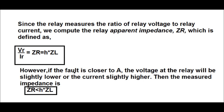Since the relay measures the ratio of relay voltage to relay current, we compute the relay apparent impedance ZR, which is defined as Vr / IR = ZR = H × ZL. However, if the fault is closer to point A, the voltage at the relay will be slightly lower or the current slightly higher. Then the measured impedance will be less than H × ZL and the relay will operate.